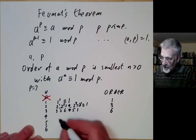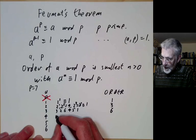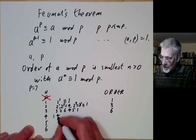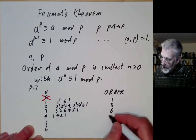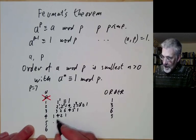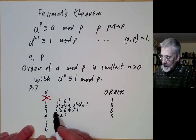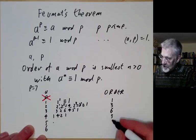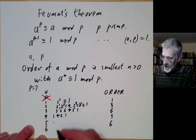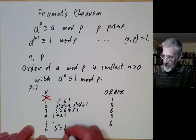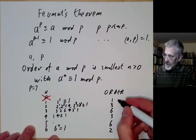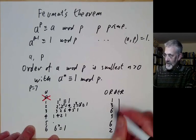If we look at 4, the powers of 4 go 1, 4, 2, 1. So the order is 3. For 5, it turns out to be order 6. And 6 squared equals 1, so 6 is order 2. So here are the orders mod 7.